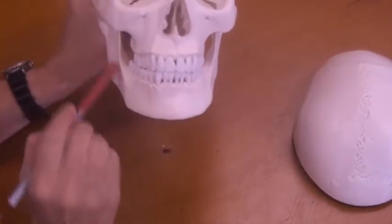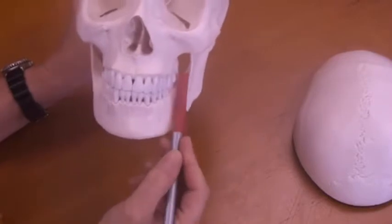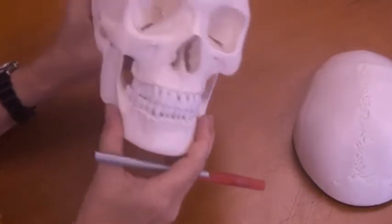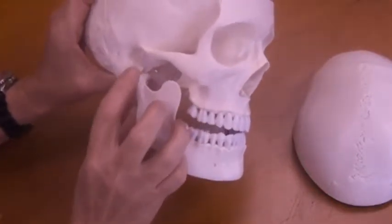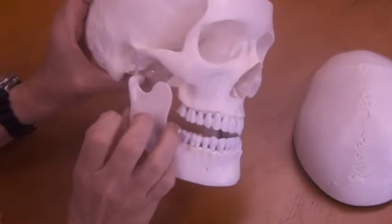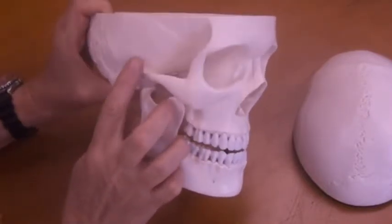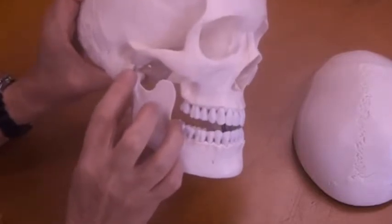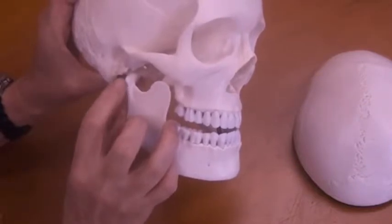We also have the mandible, which is going to be this bone here. So this is your lower jaw. This is your mandible. And a couple of things here. We've got the mandibular condyle, which is going to be this bony prominence that fits into the mandibular fossa or the indented part of the temporal bone. So this part here is the mandibular condyle, also known as the condylar process.